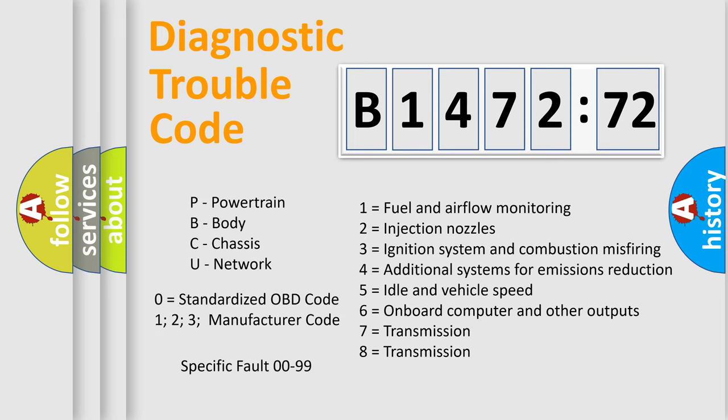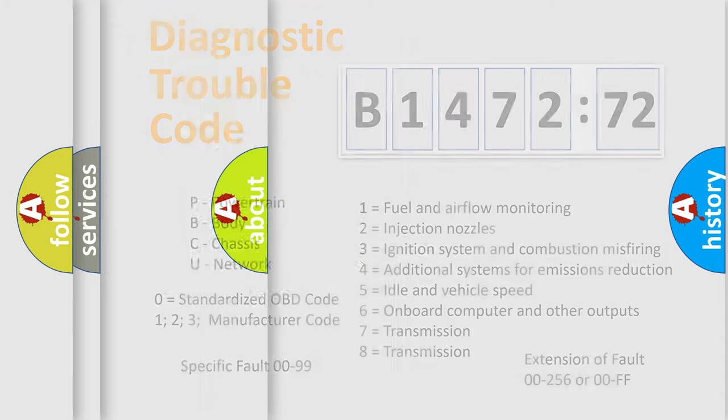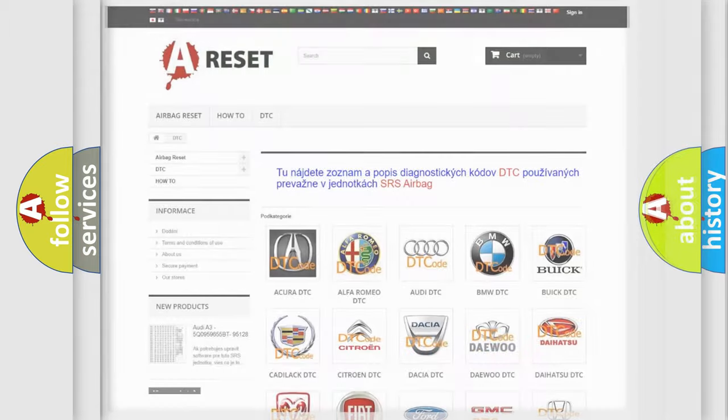Only the last two characters define the specific fault of the group. The add-on to the error code serves to specify the status in more detail, for example, a short to the ground. Let's not forget that such a division is valid only if the second character code is expressed by the number zero.